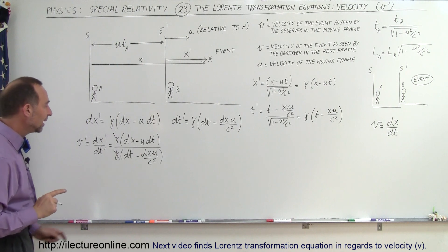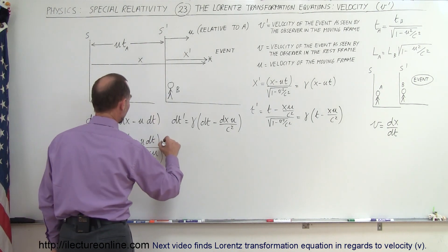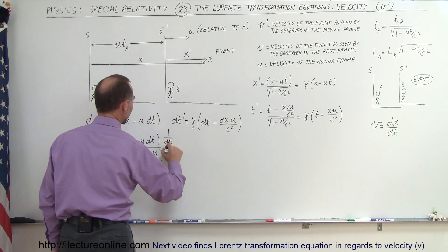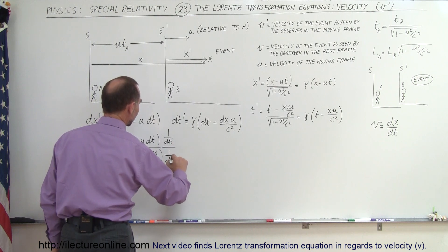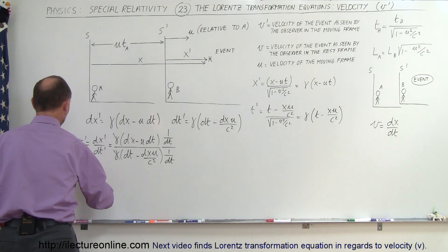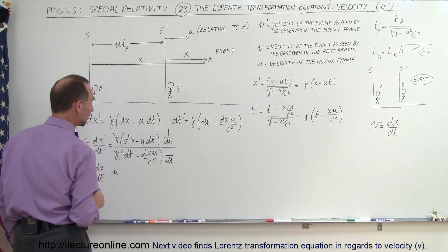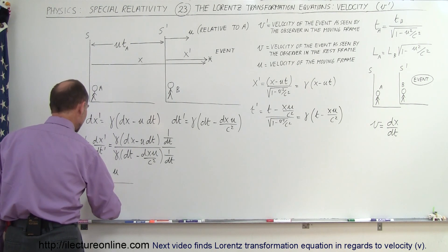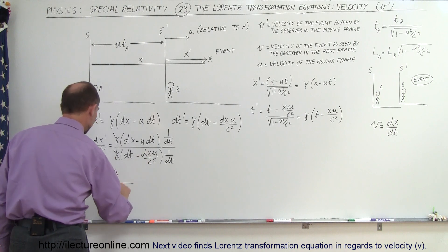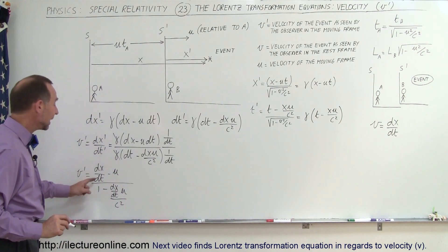What we want to do now is divide both the numerator and the denominator by DT. We're going to write 1 over DT for the numerator divided by 1 over DT for the denominator. If we do that we get V' is equal to DX/DT minus U, since DT divided by DT is simply U, divided by 1 minus DX/DT times U divided by C squared.